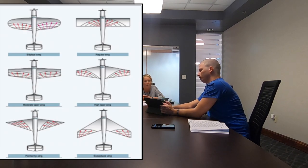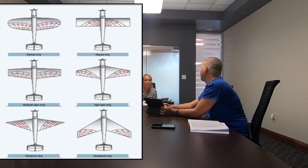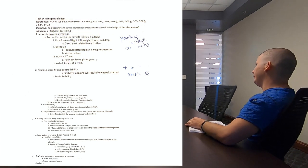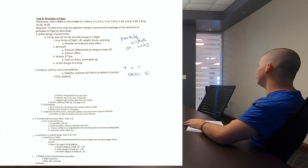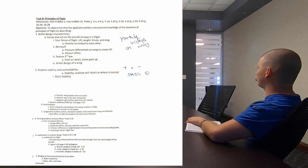I went through wing types on my iPad — elliptical, rectangular, high taper, moderate taper, and swept-back. I explained each one visually. Then we talked about airplane stability: the dihedral makes the airplane more stable, while the anhedral on something like a C-17 makes it less stable. We covered positive static, negative static, and neutral stability — trainers have positive static and dynamic stability; acrobatic airplanes have neutral; fighters have negative stability because they're flown by computer.